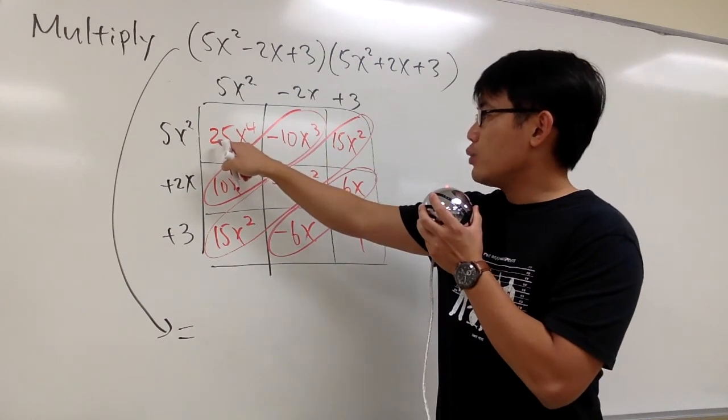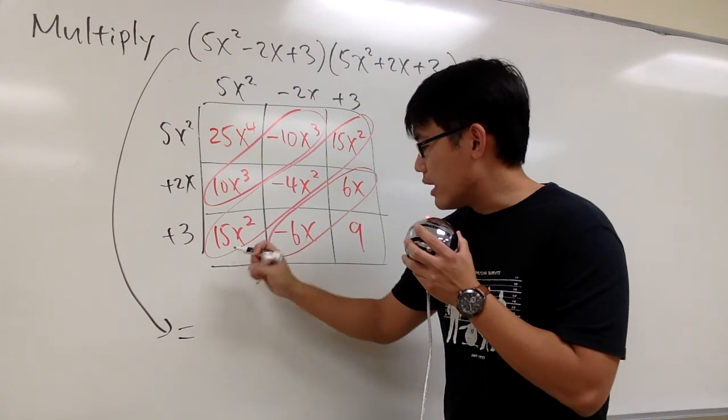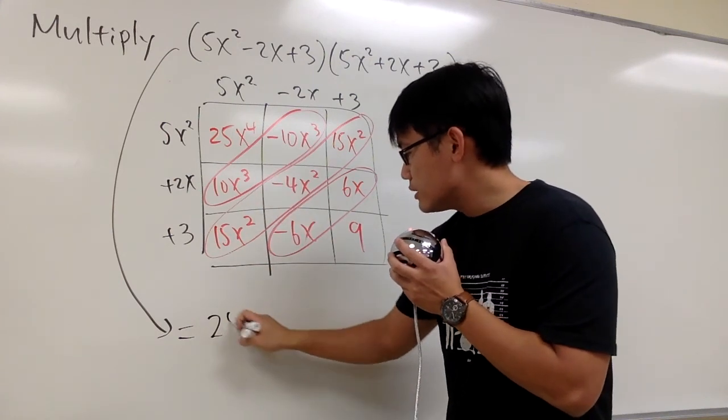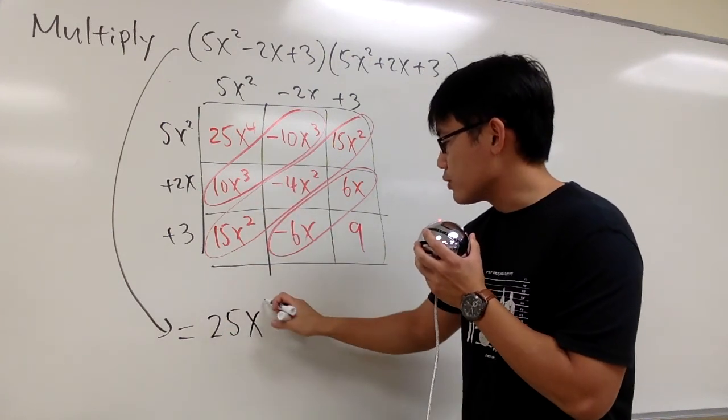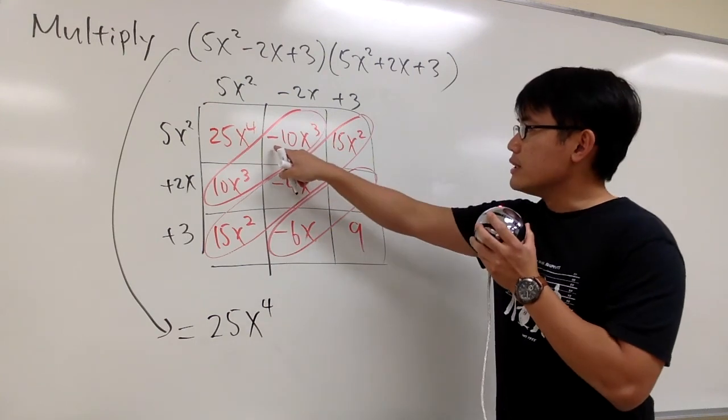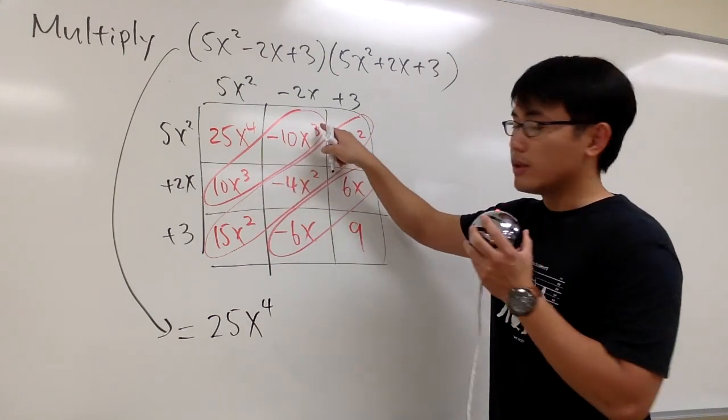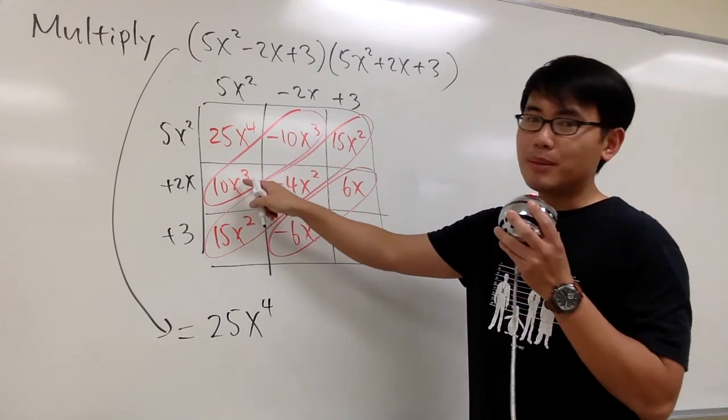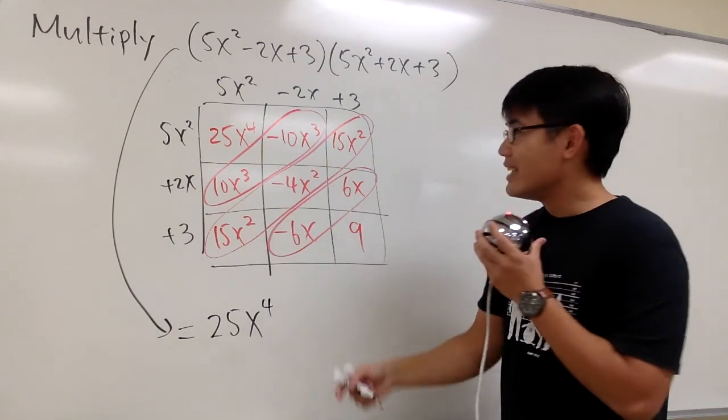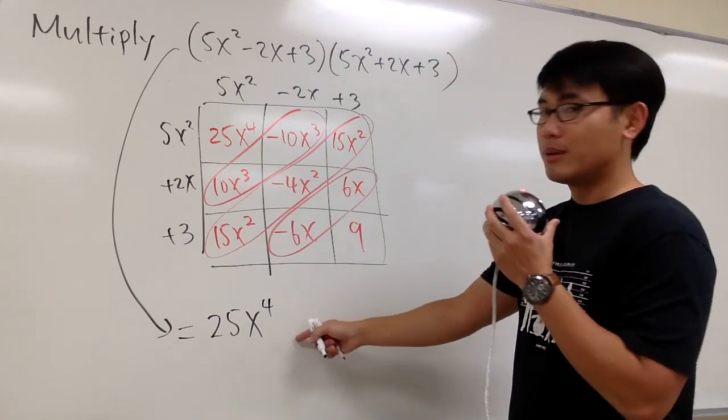This is the only x to the fourth power term. So that's just 25x⁴. And we see that -10x³ plus 10x³, they cancel each other out. So we have no x to the third power term.